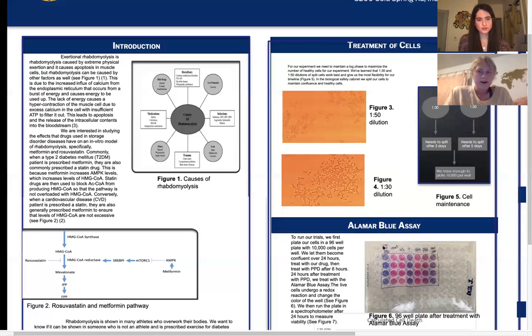So we are interested in studying the effects of the drugs used in storage disorder diseases and what effects they have on the in vitro model of rhabdomyolysis. So the drugs that we chose are metformin and rosuvastatin. And we chose metformin because it is normally prescribed to people who have type one or type two diabetes. And then we chose rosuvastatin because it is normally linked to heart troubles. And then these two drugs, as you can see in figure two, have common pathways that intersect, which is why we chose these certain drugs.